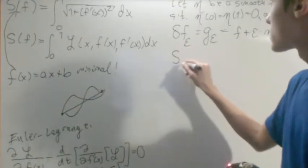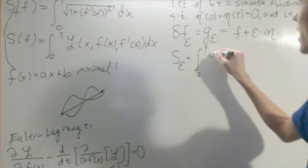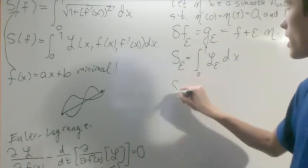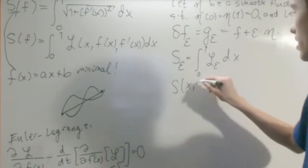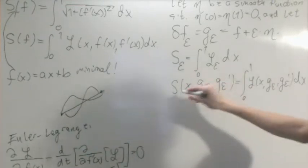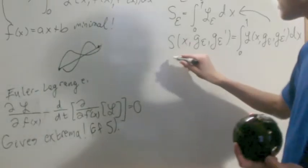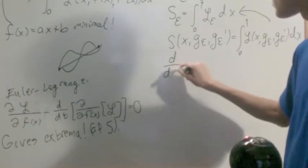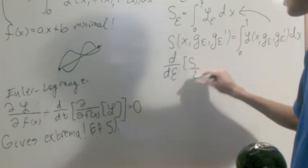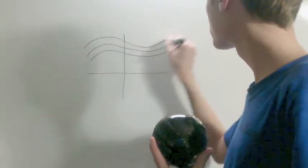We define S of epsilon as simply the integral from 0 to 1 of L_epsilon dx — just easier notation for substituting in g_epsilon. Now let's take the total derivative with respect to epsilon of this. The intuition is that by looking at all those little perturbations and taking the derivative with respect to epsilon, we're really just looking at the changes across these curves.